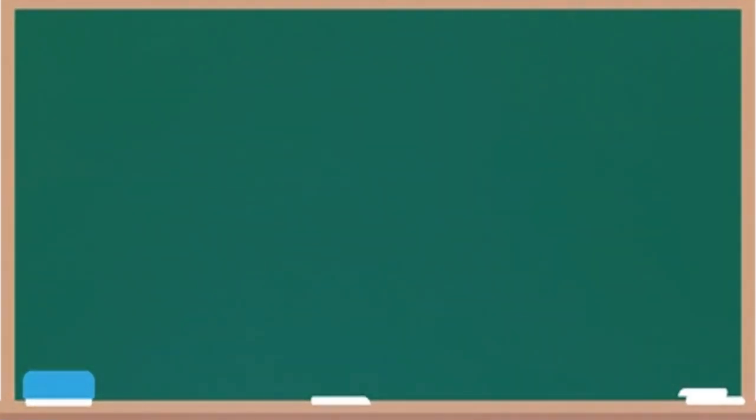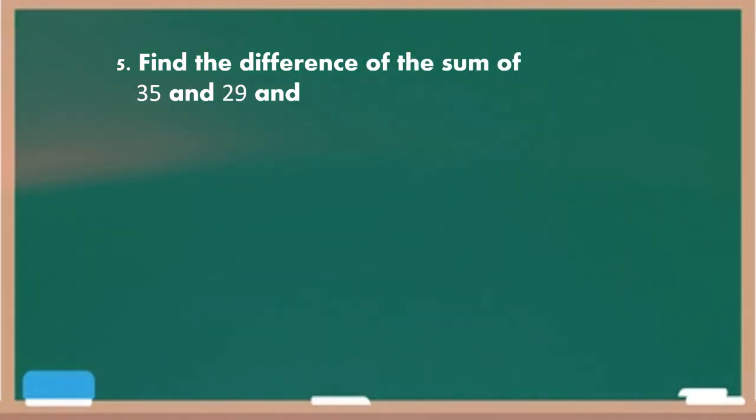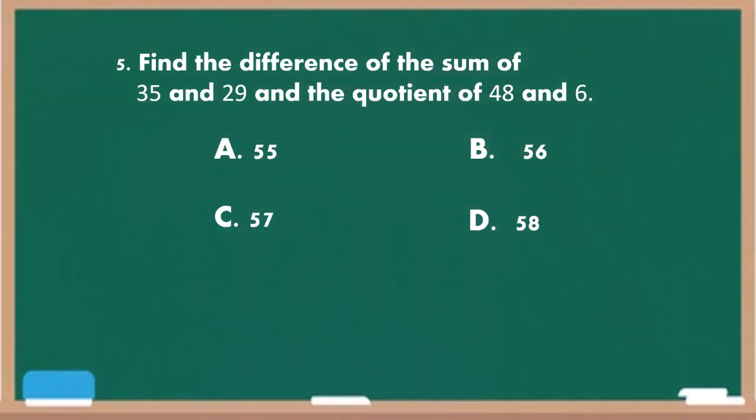And for the last number, number 5. Find the difference of the sum of 35 and 29 and the quotient of 48 and 6. Letter A, 55. Letter B, 56. Letter C, 57. And letter D, 58. Go! Times up. The correct answer is letter B.